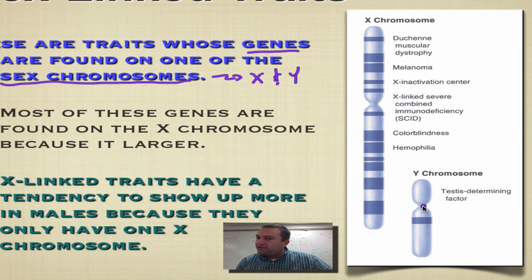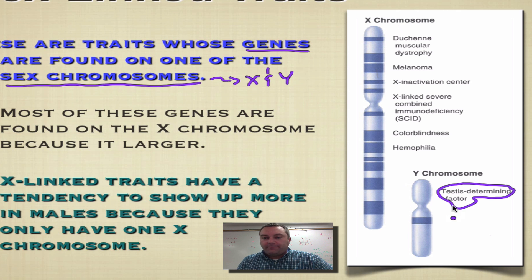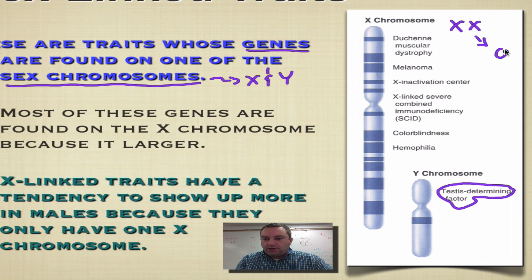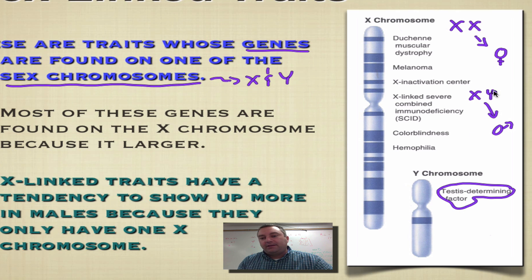The Y chromosome only has a few genes, and by far the most important is the testes determining factor. This is the gene that acts like a switch — it turns you from being a girl to becoming a boy. All human beings come pre-programmed to be a girl. If you have a pair of Xs, you're going to be a girl. If you have a Y, you are going to be a guy. Notice both sexes have at least one X chromosome, because you can only inherit an X chromosome from your mother. Having the Y and this switch is what makes you a guy.